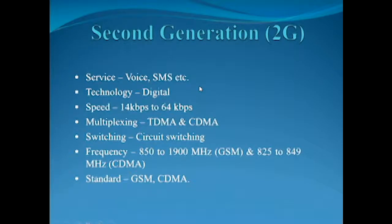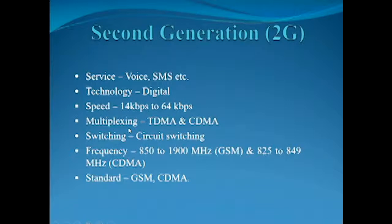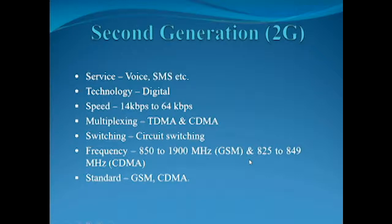Next, second generation. The features of second generation are: service — voice and SMS. Technology: digital. Speed: 14 to 64 kilobytes per second. Multiplexing: TDMA (Time Division Multiple Access) and CDMA (Code Division Multiple Access). Switching: circuit switching. Frequency: 850 to 849 megahertz for GSM (Global System for Mobile Communication) and 825 to 849 megahertz for CDMA. Standard: GSM and CDMA.